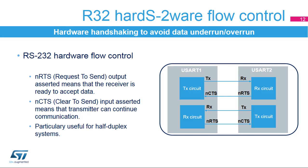In RS-232 communication, it is possible to control the serial data flow between two devices by using the NCTS and the NRTS output. These two lines allow the receiver and the transmitter to alert each other of their state. The following figure shows how to connect two devices in this mode. The idea is to prevent dropped bytes or conflicts in case of half-duplex communication.